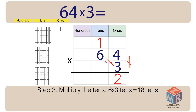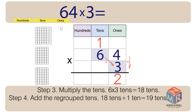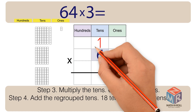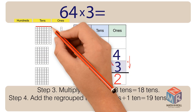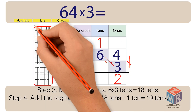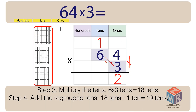6 times 3 tens is equal to 18 tens. Step 4: Add the regrouped tens. 18 tens plus 1 ten is equal to 19 tens.